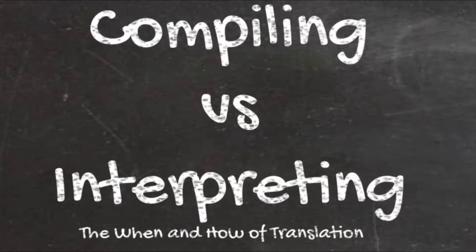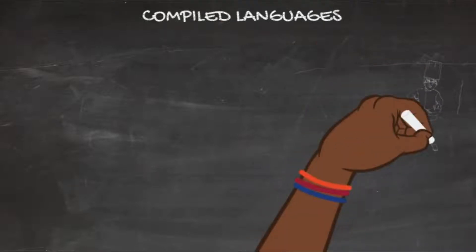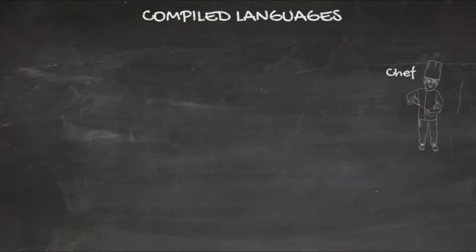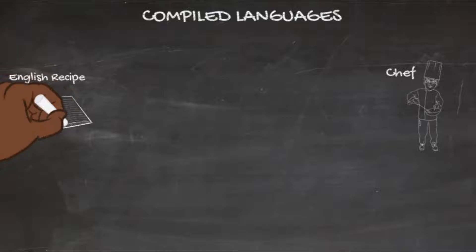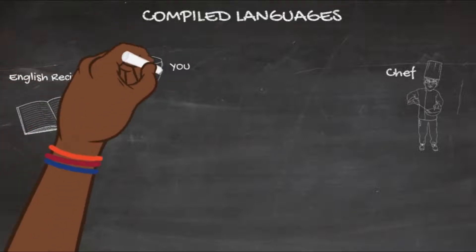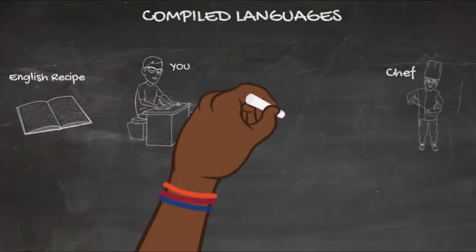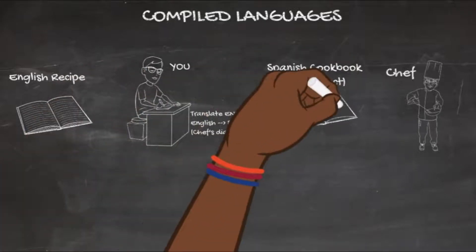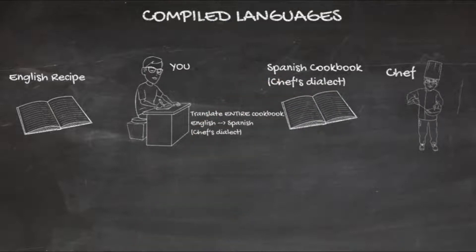That translation can occur by compiling the language or interpreting it. The difference between the two is how and when that translation happens. Let's start with an explanation of a compiled language using a cooking analogy. Imagine your friend is an incredible chef interested in cooking a popular American dish, but he only understands a very specific dialect of Spanish, and the recipe is in English. So he gives you the entire cookbook and asks you to translate it.